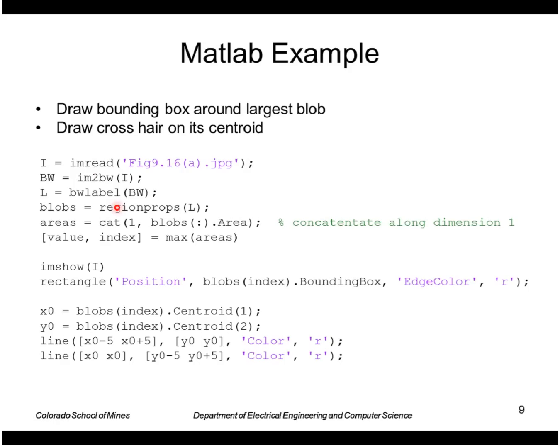So here's an example of drawing a bounding box around the largest blob. We read in the image, label it, find the areas just as we did before, find the maximum of the areas. So this gives me the value of the maximum and the position of the maximum. This will draw a rectangle around using the bounding box that I returned from here. And then this extracts the x0, y0, the centroid of that largest blob. And this draws a crosshair on it.